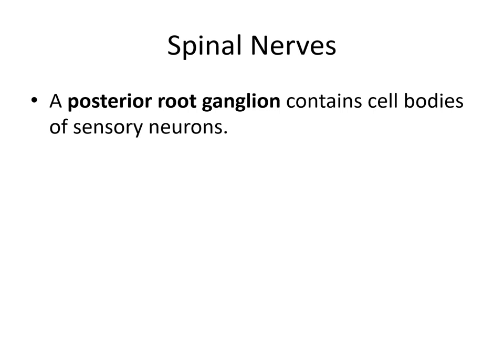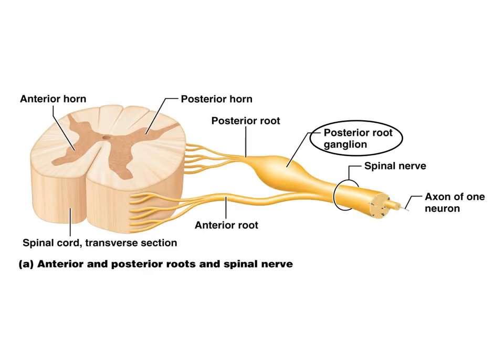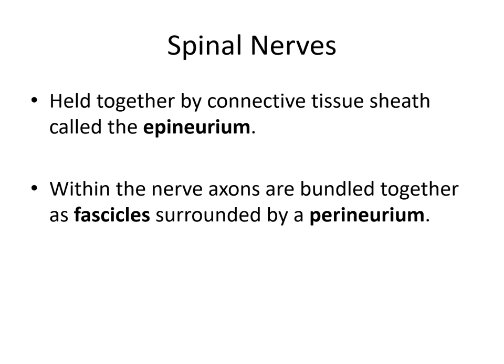Another way to tell which side of the spinal cord you're looking at is to look for the posterior root ganglion, which contains the cell bodies of sensory neurons. Ganglia are cell bodies of the peripheral nervous system. When you see this bulge in the posterior root, those are the cell bodies in the posterior root ganglion. There is no anterior root ganglion, so this swelling is another way of distinguishing the posterior side.